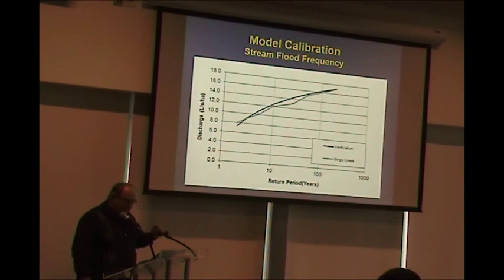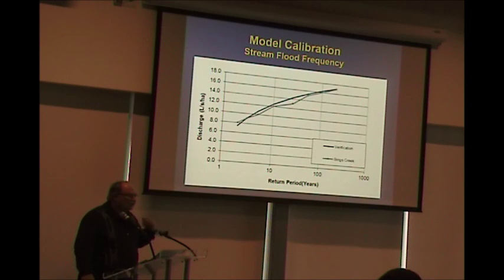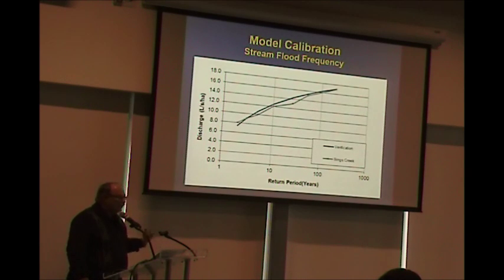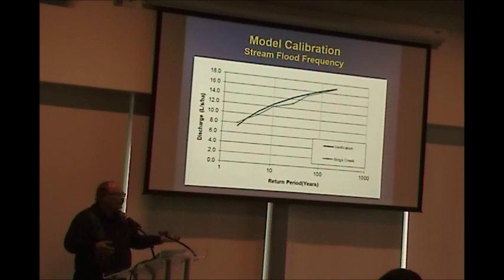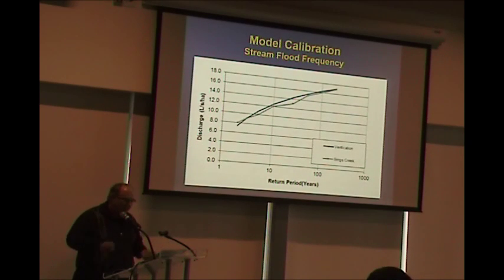Looking at that one — I remember it — that was about 36 years of data, field data from the stream. We had the corresponding data from the climate records. So we ran our model for 36 years and did a comparison between what's in the stream and what the model predicted. And we matched it. So that was pre-development conditions.